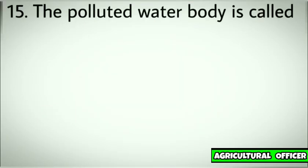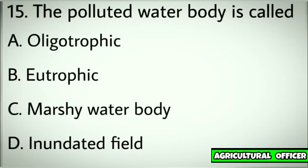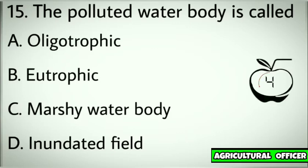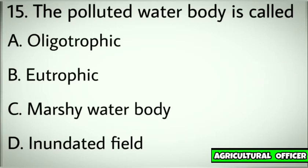Question number fifteen. The polluted water body is called? Options: A. Oligotrophic. B. Eutrophic. C. Marshie water body. D. Inundated field. Correct answer: B. Eutrophic.